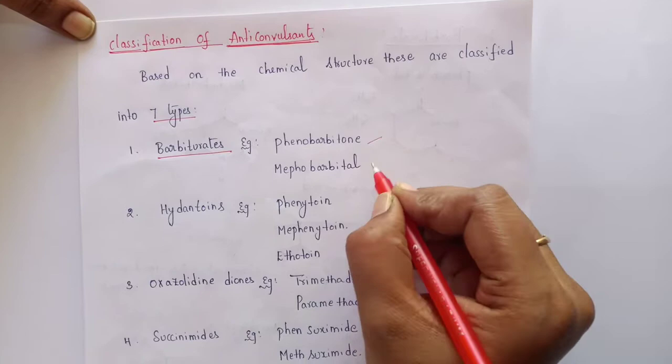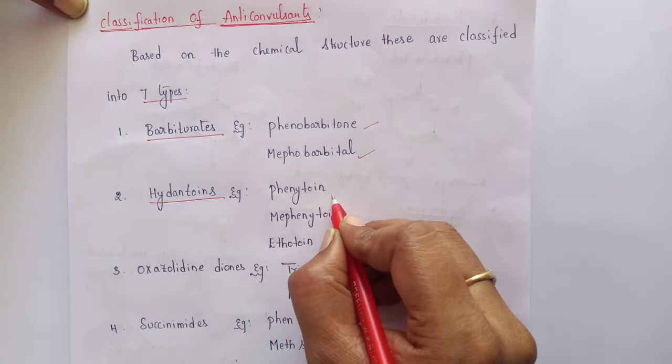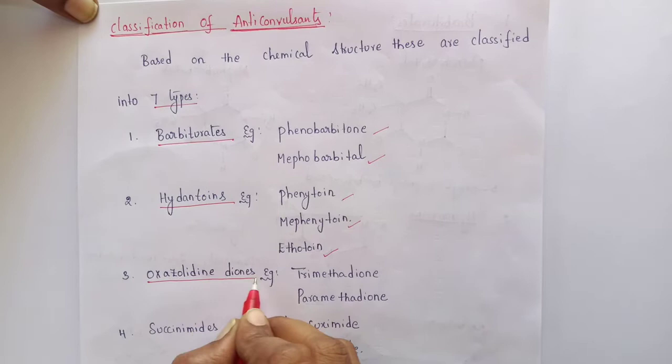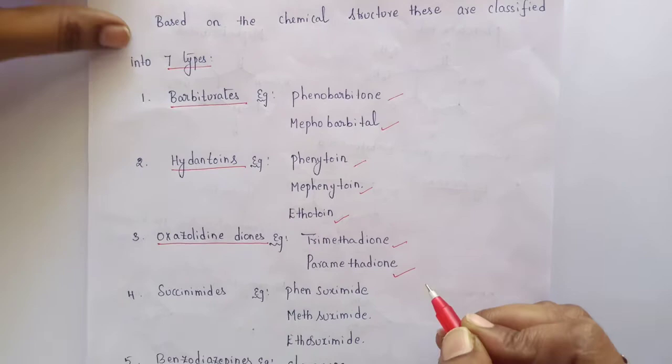The 2nd class of drugs are hydantoins. The examples are phenytoin, mephenytoin, and ethotoin. The 3rd class of drugs are oxazolidinedione derivatives. Two examples are trimethadione and paramethadione. The 4th class is succinimides.